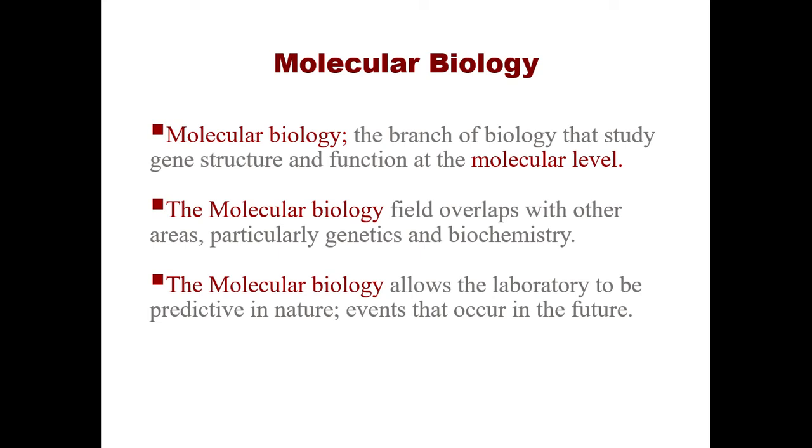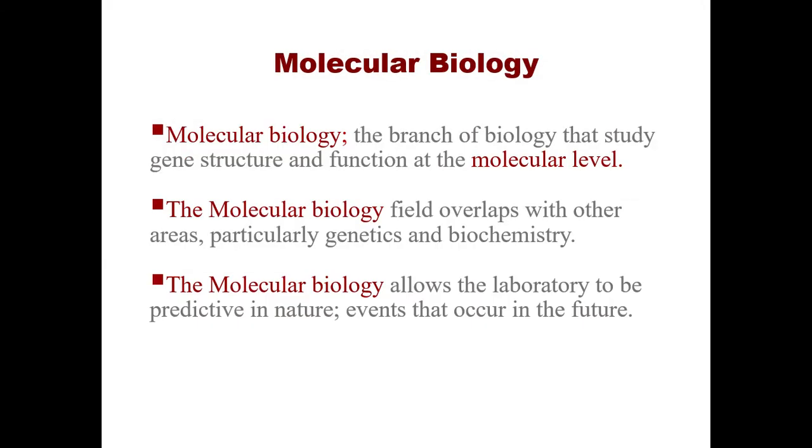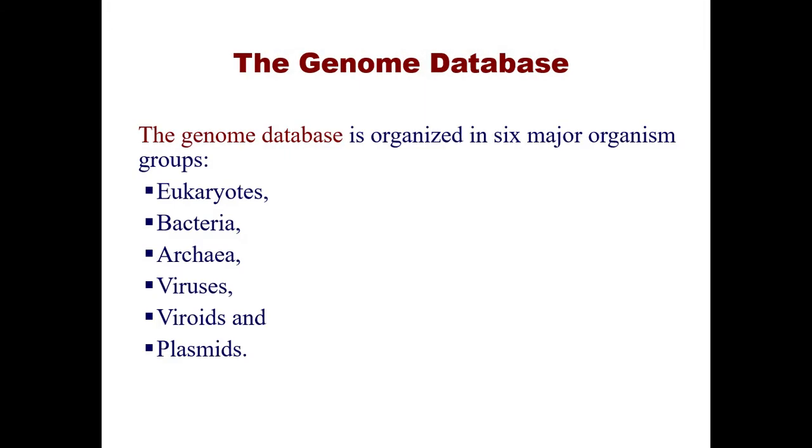The genome database includes six major organism groups: eukaryotes, bacteria, archaea, viruses, viroids, and plasmids. After listening to the six major organisms, you may guess the third domain of life. Let's keep going and we will get it very soon.